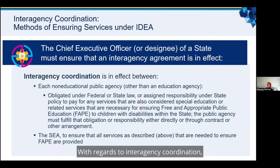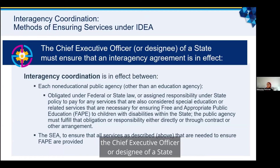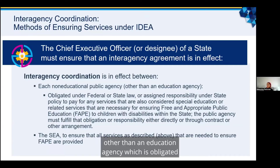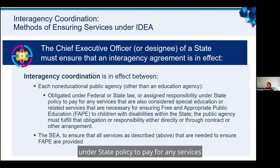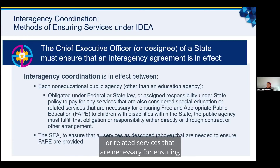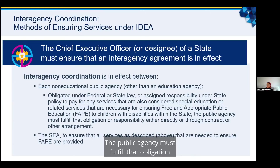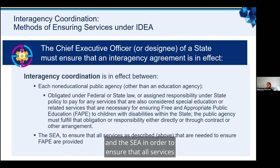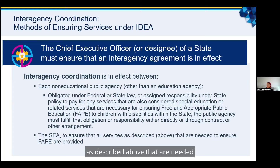With regards to interagency coordination, the Chief Executive Officer or designee of a state must ensure that an interagency agreement is in effect between each non-educational public agency other than an education agency, which is obligated under federal or state law or assigned responsibility under state policy to pay for any services that are also considered special education or related services necessary for ensuring free and appropriate public education, known as FAPE, to children with disabilities. The public agency must fulfill that obligation either directly or through contract or other arrangement, and the SEA must ensure all services needed to ensure FAPE are provided.